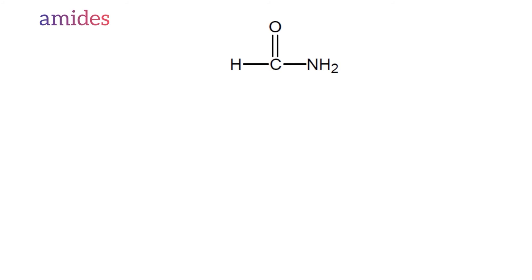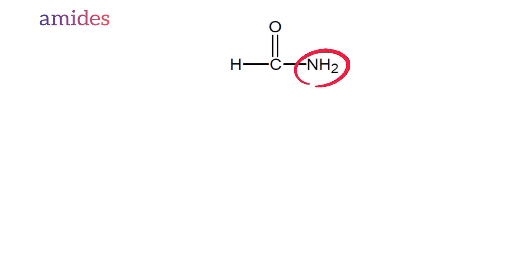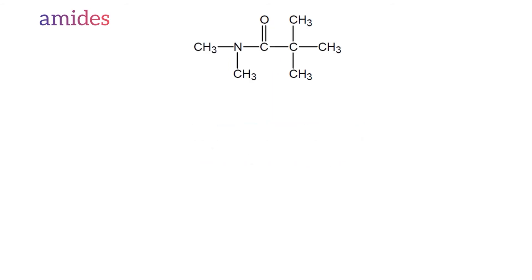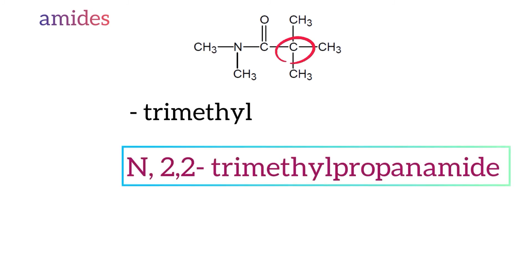Amides: here is an example of an amide organic compound. As you can see there is a carbonyl functional group and an amine functional group adjacent to each other, therefore the name of the molecule is methanamide. Here is another example of amides — feel free to pause the video and give it a try. There are three methyl groups attached on carbon one, therefore the name includes 'trimethyl'. There are two methyl groups attached on the nitrogen atom, therefore the name starts with N, giving N,2,2-trimethylpropanamide.